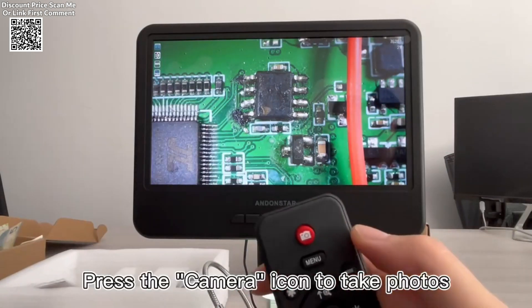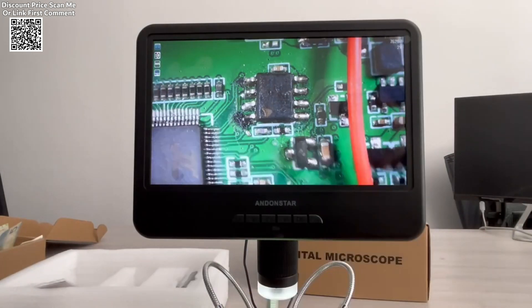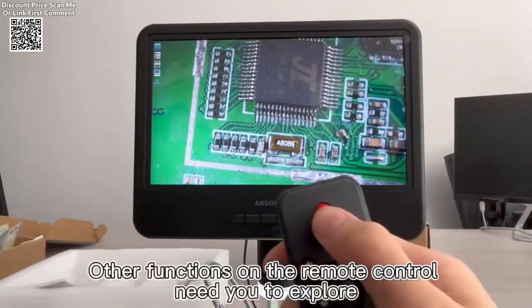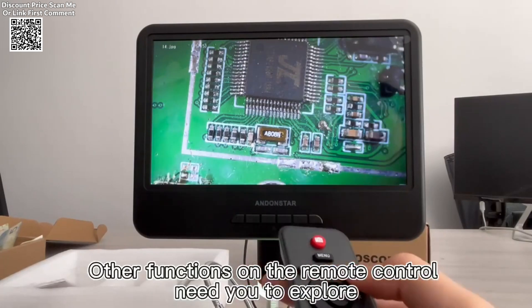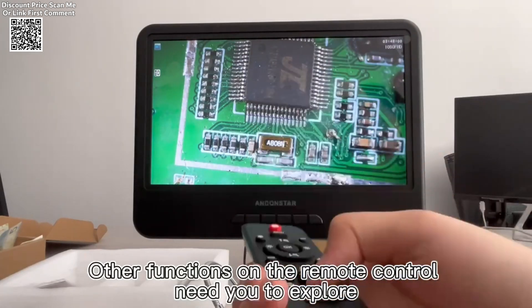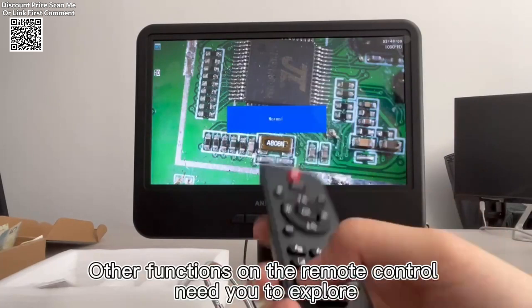Lighting is crucial when working with small objects, and the Andonstar AD-210 addresses this need with two external fill lights and built-in LEDs. These lights ensure that the subject is well-lit, even in dim conditions, enhancing visibility and minimizing shadows.